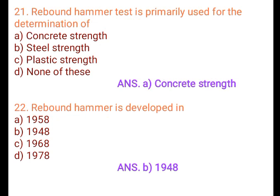Question 21: Rebound hammer test is primarily used for the determination of: A. Concrete strength, B. Steel strength, C. Plastic strength, D. None of these. Answer: A. Concrete strength.